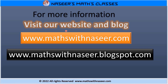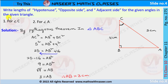We are going to solve page number 275, chapter 11 Trigonometry: write the length of hypotenuse, opposite side, and adjacent side for the given angles in the given triangle.